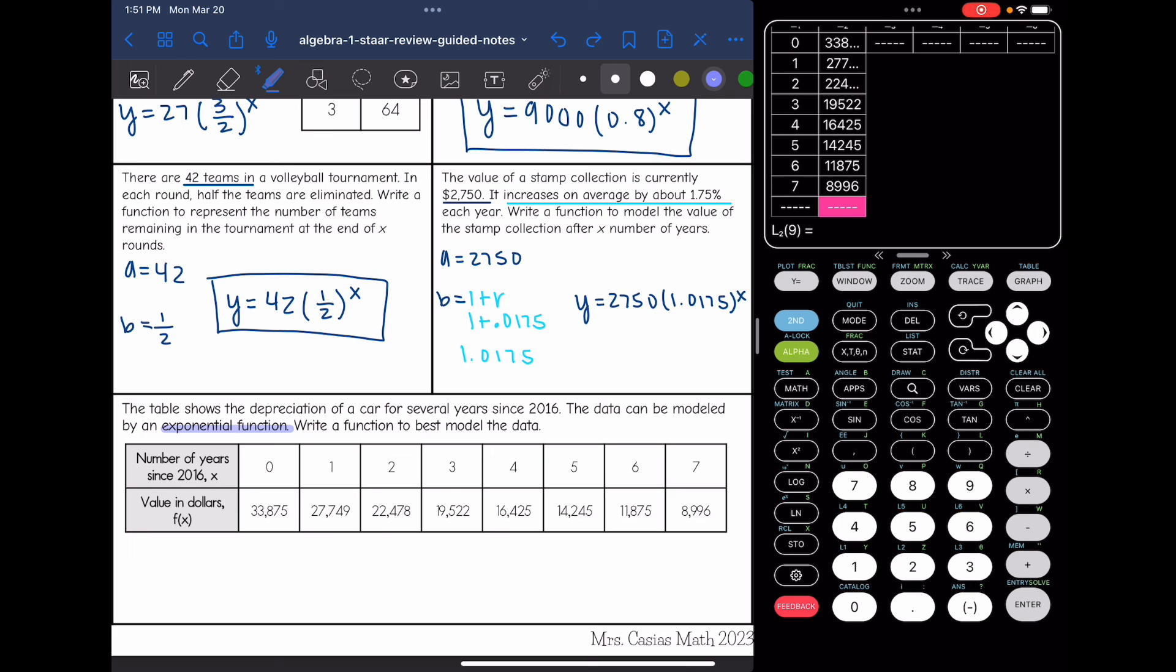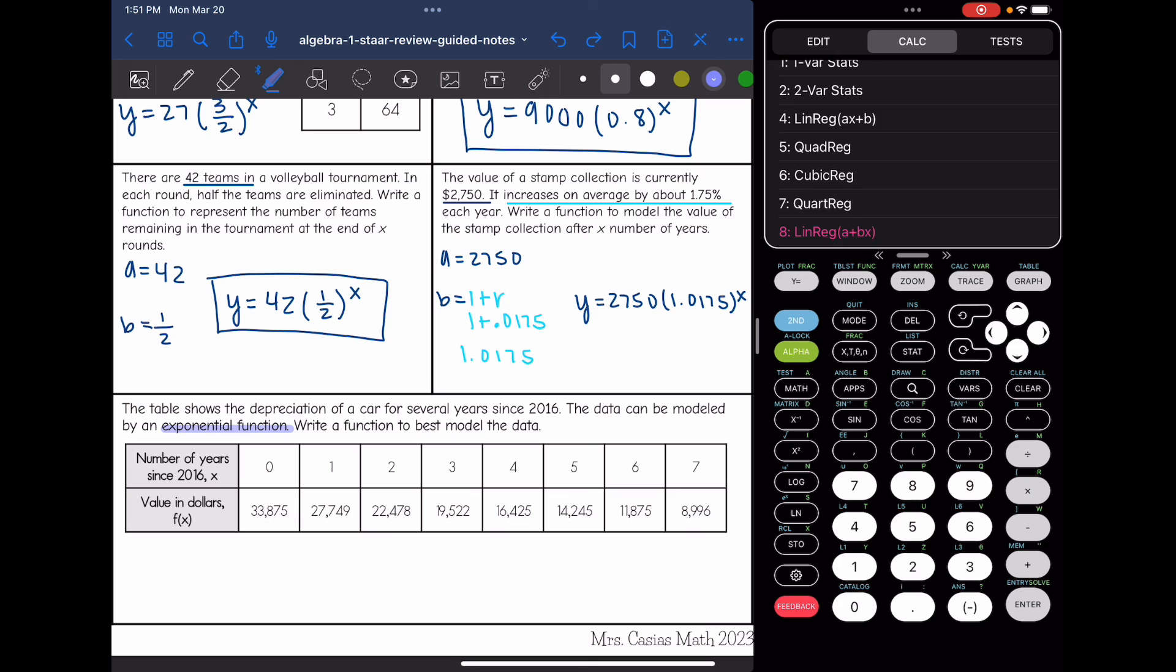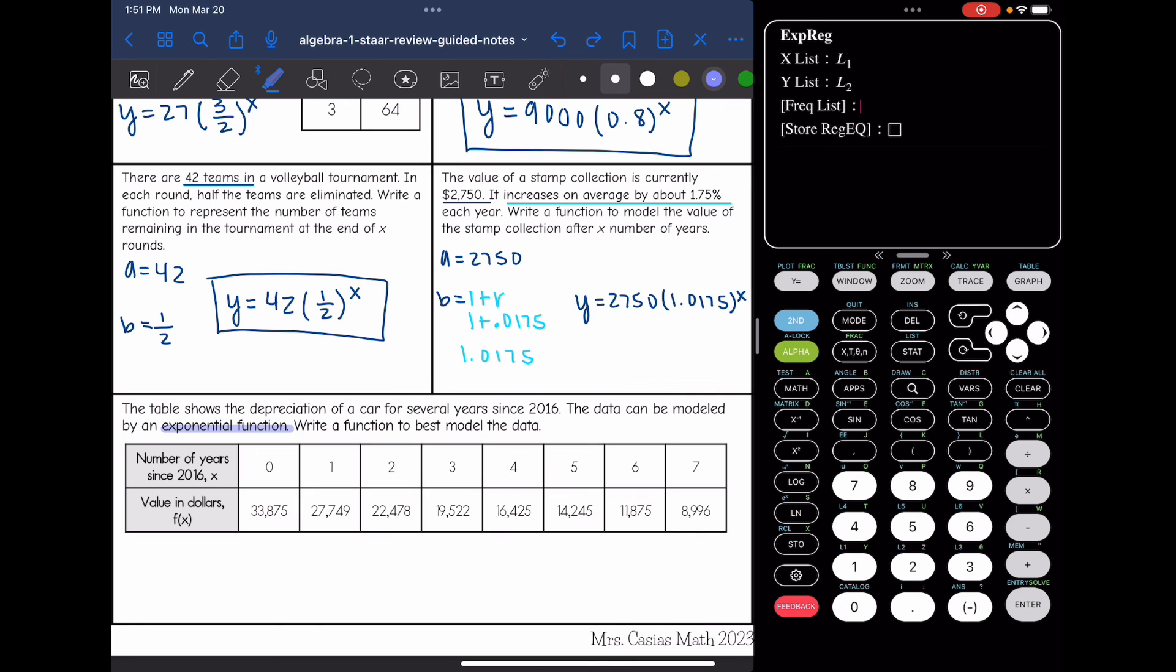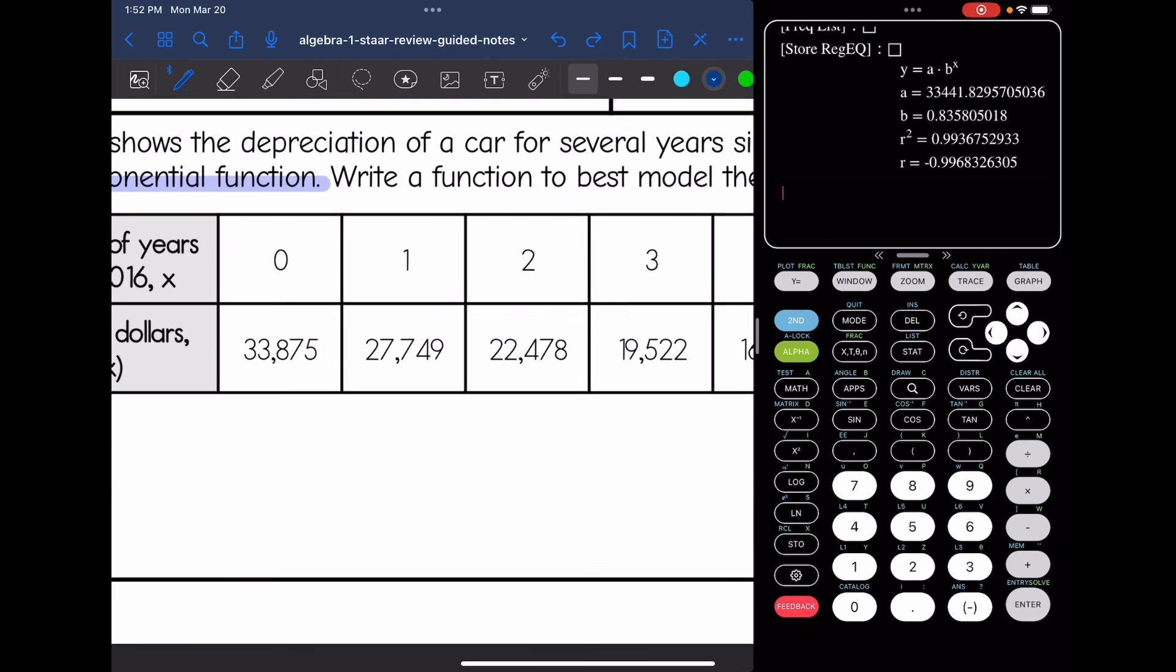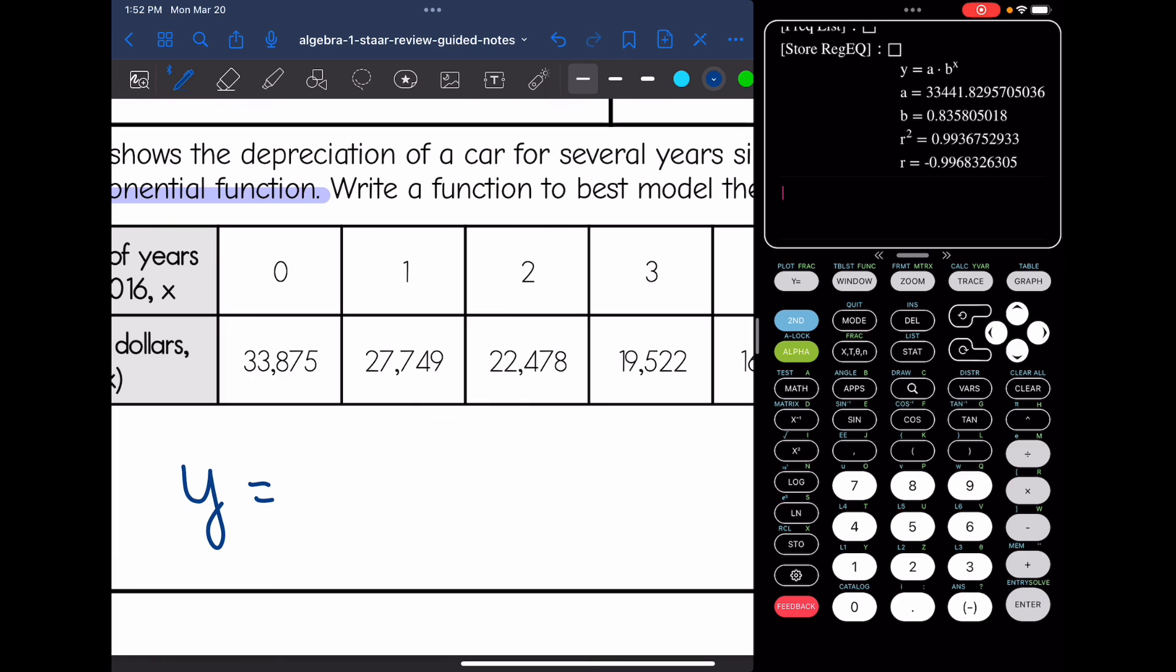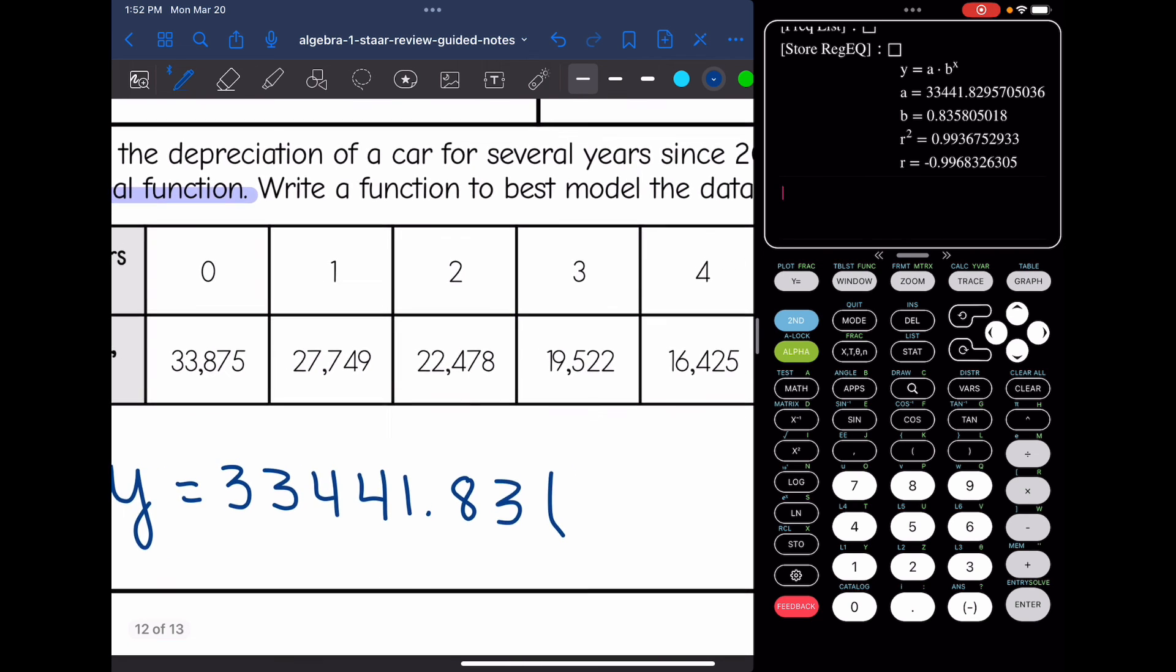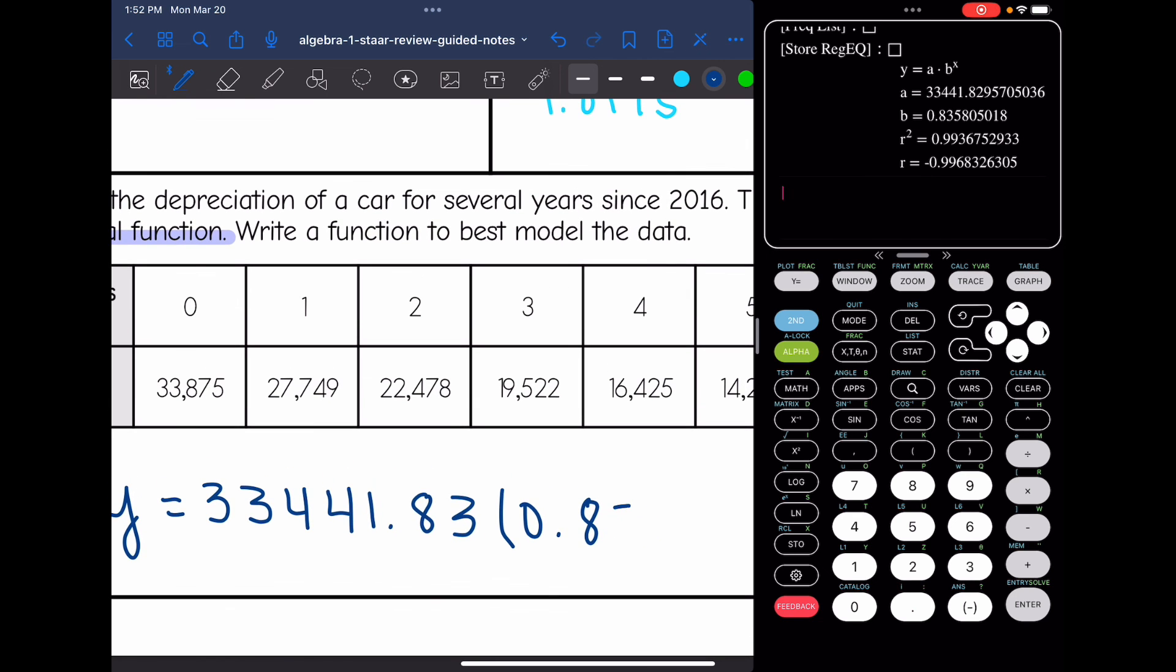Okay, now I have all my data in and I'm going to do stat arrow over to calc, then go down to zero for exponential regression. And the a value is 33,441.83. And then the b value is 0.836. So I can write my equation for this table. Now it would be y = 33,441.83(0.836)^x.